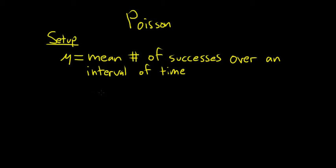So the setup is you have a mean number of successes over an interval of time. That's the key. Usually in the problems you're given something like deaths per year, checks per month. You're given an average over a period of time, and that's how you know it's going to be a Poisson problem.